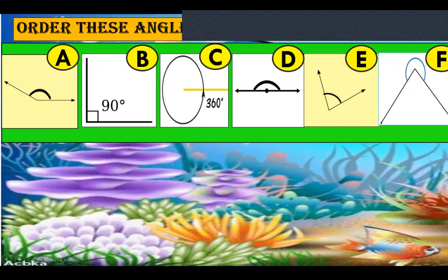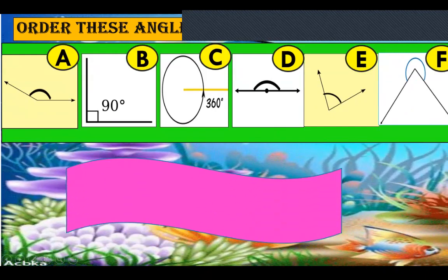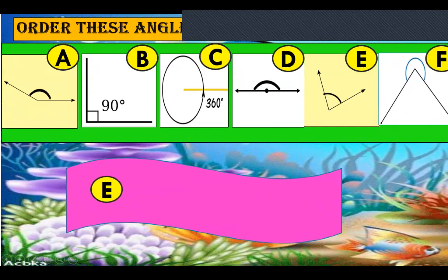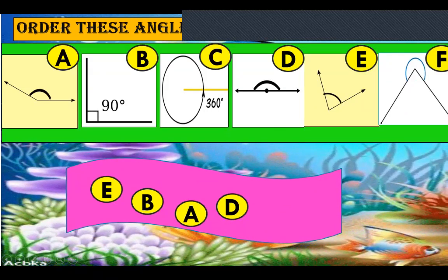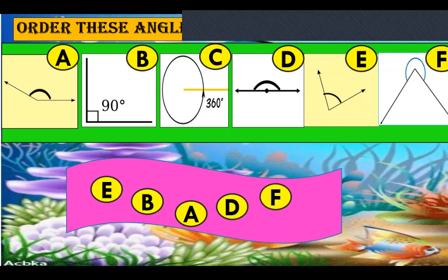Let's check. The smallest angle is E, then comes B, then A, D, F and lastly C.